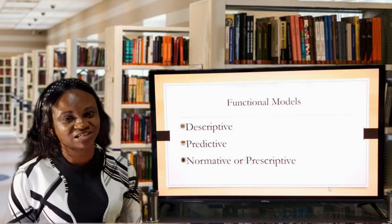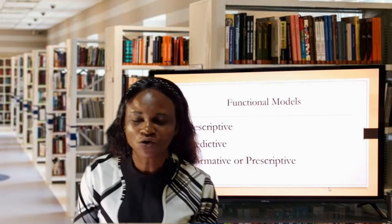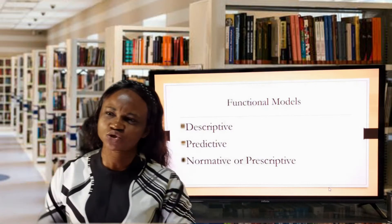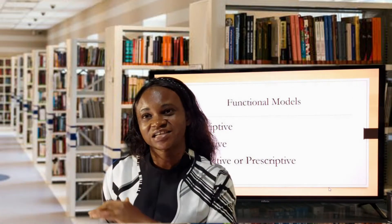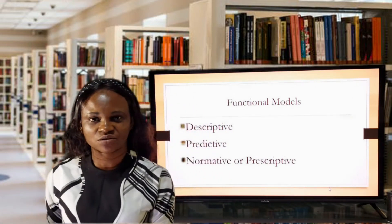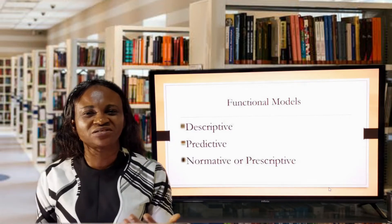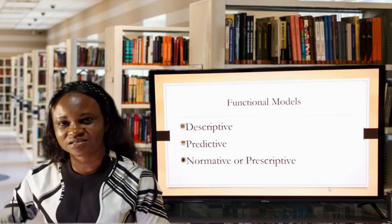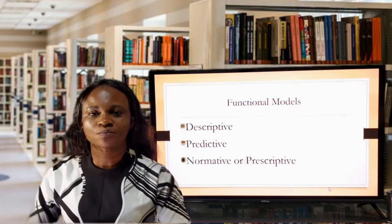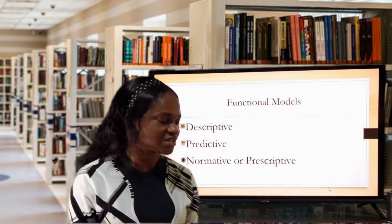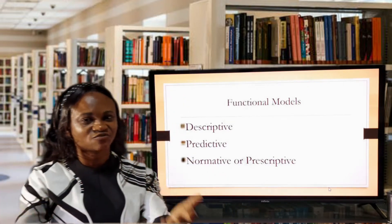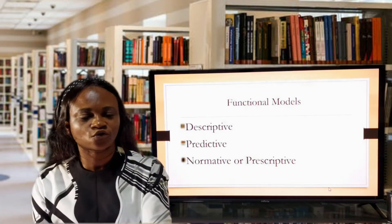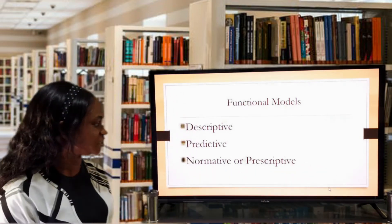We have the predictive model. This goes beyond description. For instance, I want to describe Mr. Shaw — I say Mr. Shaw is a tall man, he's a handsome man, he's an intelligent man. That's just description. But when it comes to predicting, I am making a forecast. I am saying this is likely to happen — Mr. Shaw should be the course rep of the class. That is a predictive model: predicting what exactly is to be done from the description that has already been given.